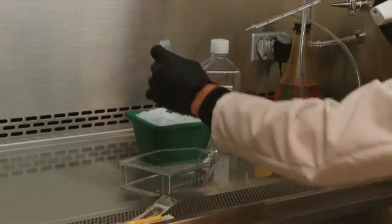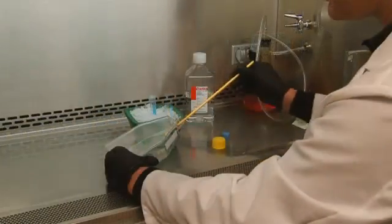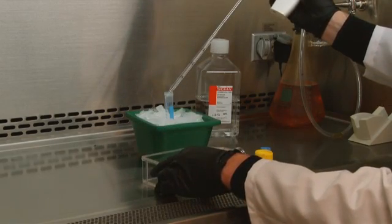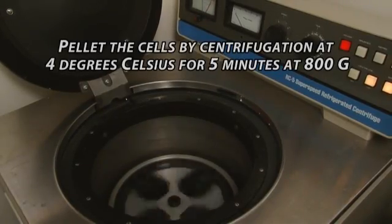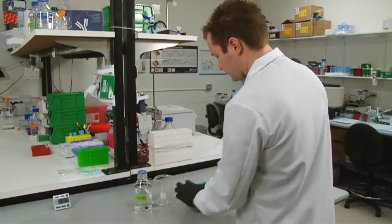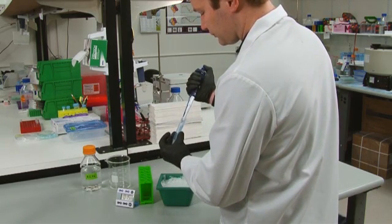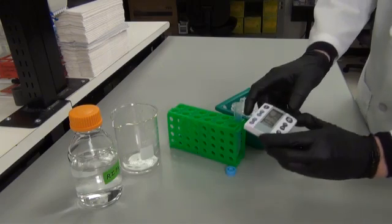Next, add 4 mils of ice-cold PBS that also contains appropriate protease inhibitors to prevent degradation of your proteins. Scrape the cells into solution and transfer to a 15 mil conical tube. Pellet the cells by centrifugation at 4 degrees Celsius for 5 minutes at 800 g. Discard the supernatant and resuspend the cells in 400 microliters of RIPA lysis buffer and appropriate protease inhibitors. Transfer the cells to a siliconized microcentrifuge tube and incubate on ice for 15 minutes. After this, you are ready for DNA shearing.